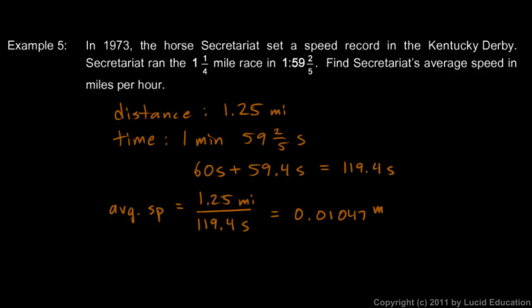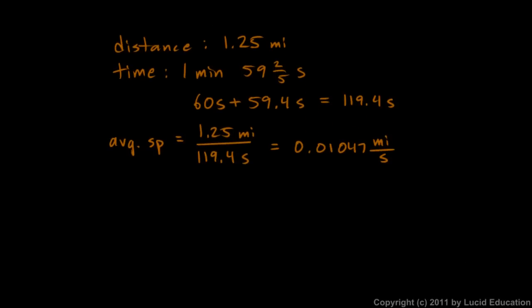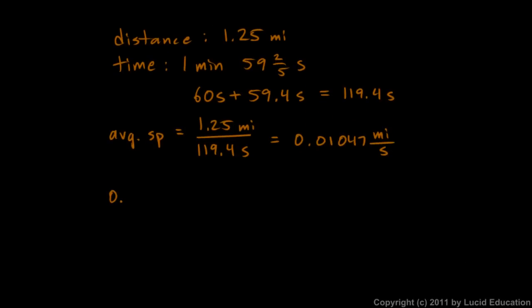We don't want our answer in miles per second — we need miles per hour. To convert, we write down what we have: 0.01047 miles per second, and multiply by a fraction equal to 1. We want to cancel out seconds and end up with hours, so we put seconds in the numerator and hours in the denominator.